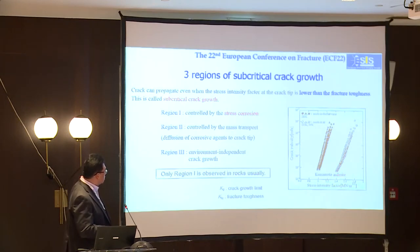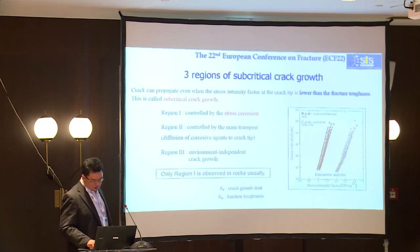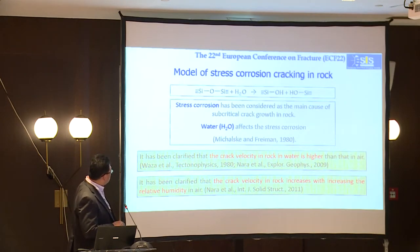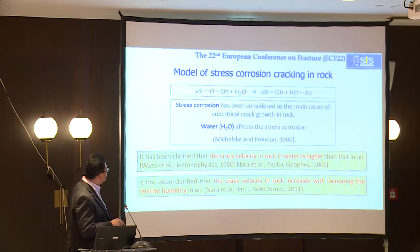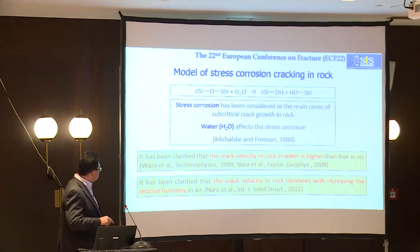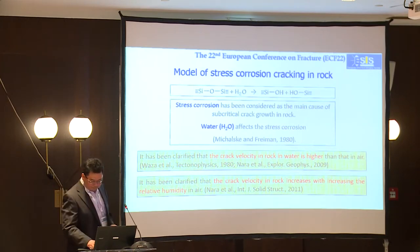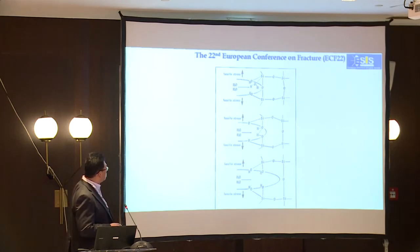This is a result for granite — as seen here, we can see only one linear region, which is the stress corrosion region. In rock, stress corrosion happens between Si-OH and Si-OH bonds, for example, and water. By applying stress at the crack tip, if water exists, some bond breaking happens between water and Si, generating new Si-OH groups. This is a model of stress corrosion cracking in the presence of water. Water affects stress corrosion very much; it has been observed that crack velocity in rock in water is much higher than in air, and increasing relative humidity also increases crack velocity.